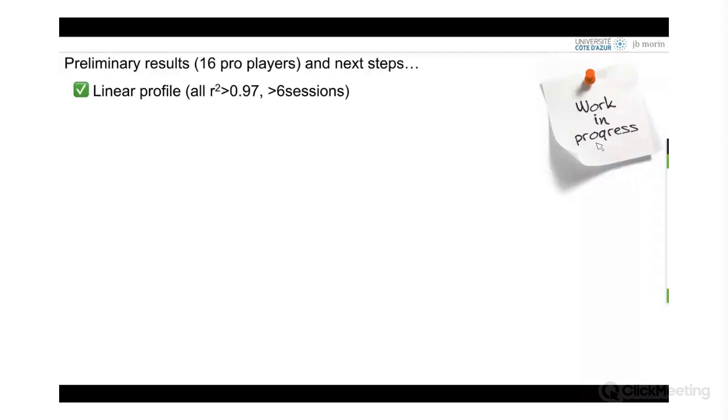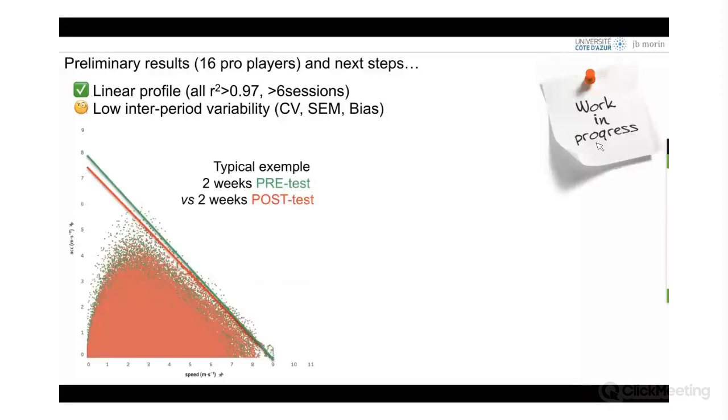You need at least six sessions of data to be sure to have every maximum acceleration throughout the speed spectrum. We have a pretty good inter-period reliability, so basically we compare two weeks of training to two weeks of training just after. And so the statistics are pretty good.